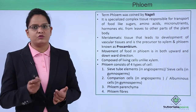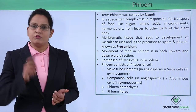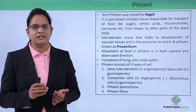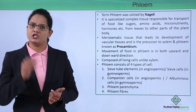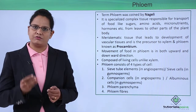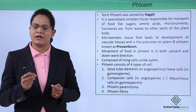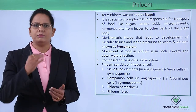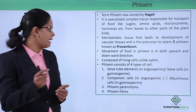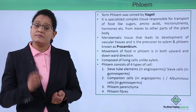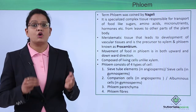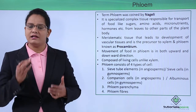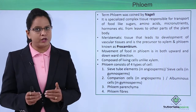Phloem is also derived from meristematic tissue, which is pro-cambium. The transport in phloem is bi-directional — in case of xylem it was uni-directional, from bottom to top, but since leaves are also present at lower parts of the plant, phloem transports food both top to bottom and bottom to top. This tissue is made up of mainly living cells; in xylem, three of the four cells were dead, but here most cells are living.